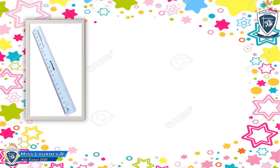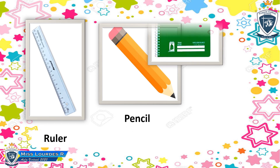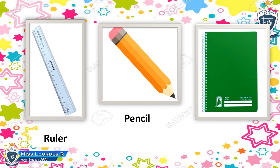Now we were talking about what else? We talked about school objects. What is it? It's a roller, yes, roller, yes, very good. What is it? It is a pencil, yes, pencil. Very good. What is it? It is a notebook, yes.